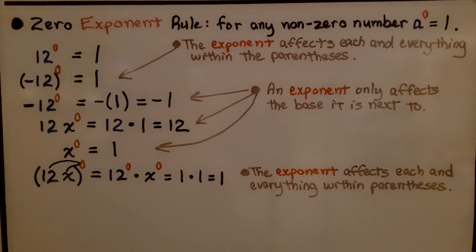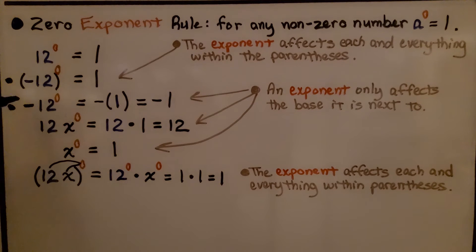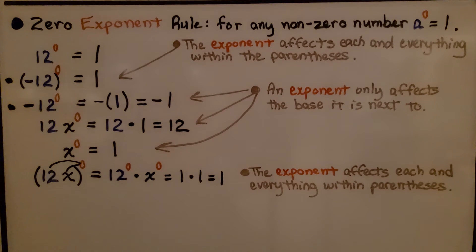The exponent affects each and everything within parentheses. These two cases can get very confusing, so I'd advise you to write down: (-12)^0 = 1 and -12^0 = -1, and why — that would be very helpful on a test or in homework.